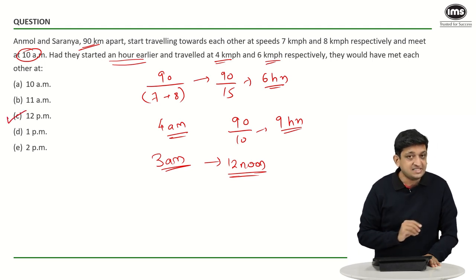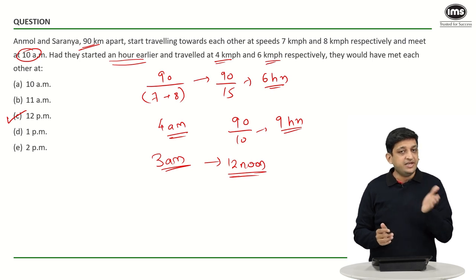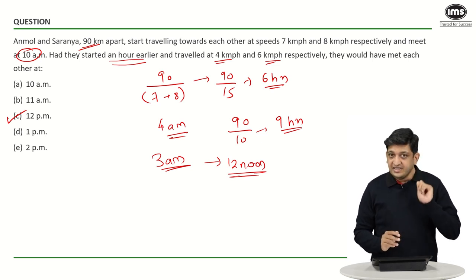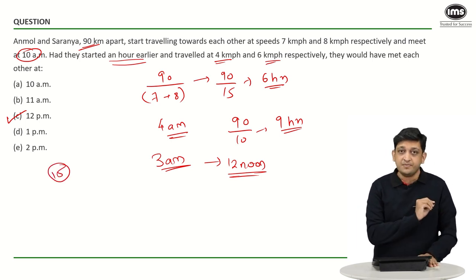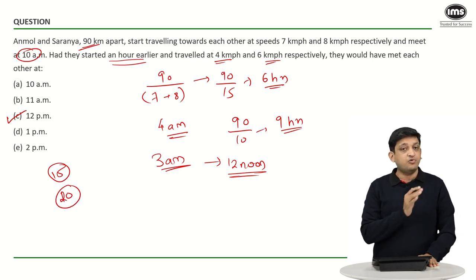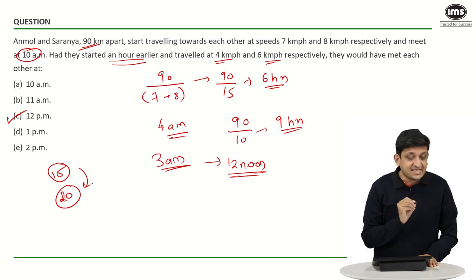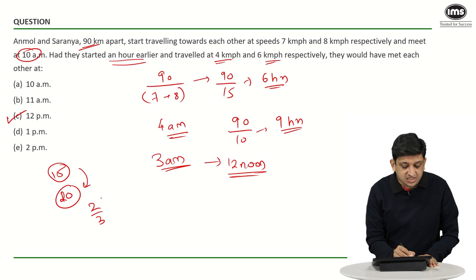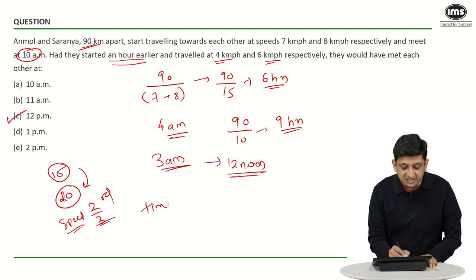So, the answer here is option C, that is 12 p.m. You can also think about it in a slightly different manner to reduce your time. In the initial case, the effective speed was 15 kilometers per hour. In the second case, the relative speed was 10 kilometers per hour — 4 plus 6. The speed in the second case is two-thirds of the speed in the first case. So if speed becomes two-thirds of itself and the distance is constant, the time taken should become three-halves of itself.